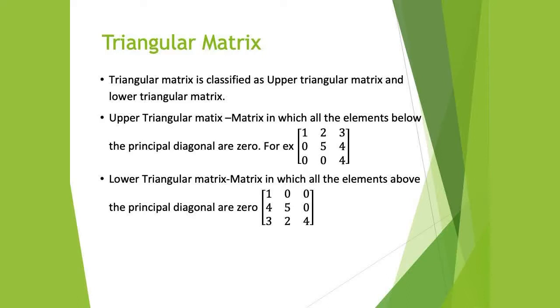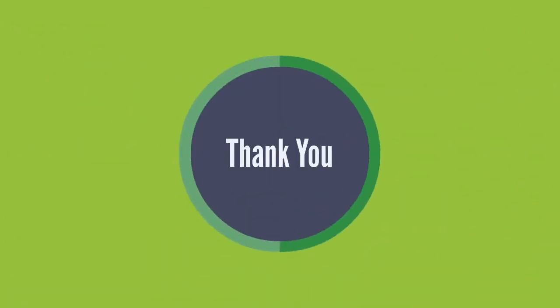Next is the lower triangular matrix — the matrix in which all elements above the principal diagonal are 0. All elements above the principal diagonal should be equal to 0. There is no restriction on the elements below the principal diagonal; they can be 0 or non-zero. But all elements above the principal diagonal should be equal to 0. In the next video, we will further study about the triangular matrix — how to find the number of elements in it. Okay? Thank you very much.